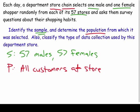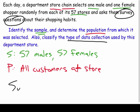They're surveying 114 people to find out what they think, representing the entire population — because it'd be almost impossible to survey the entire population, which is why you pick a sample. Lastly, classify the type of data collection. Since they ask survey questions and aren't observing anything or running an experiment, this would be a survey.